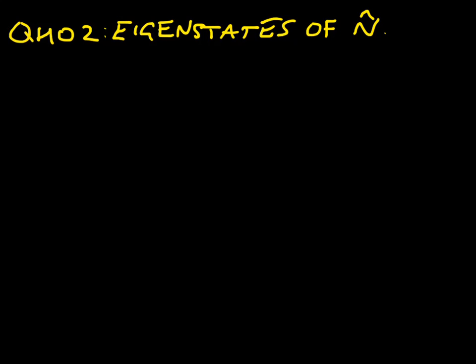So let's assume that we have a state, an eigenstate of n. Let's call that phi, and it's going to have an eigenvalue of lambda. That's not really saying very much, all we're doing is assuming that we've got a state.